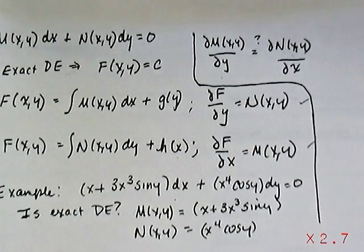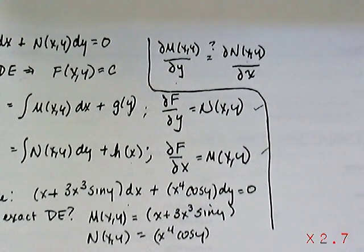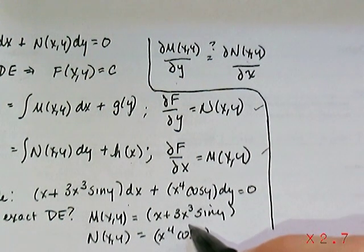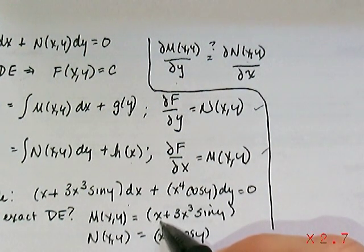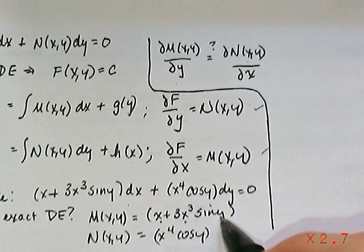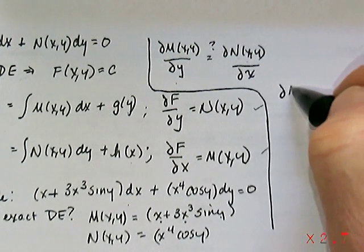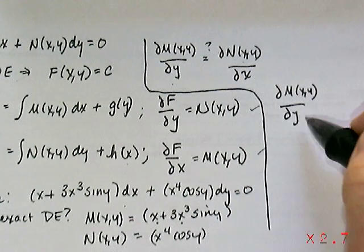So then if you come down here and let's check that by looking at these terms right here, M and N. If you take the partial of M with respect to y, that means you're going to hold the x terms constant. So the derivative of x with respect to y would be 0. This would be like a constant times sine y.